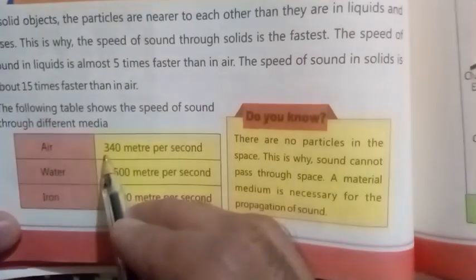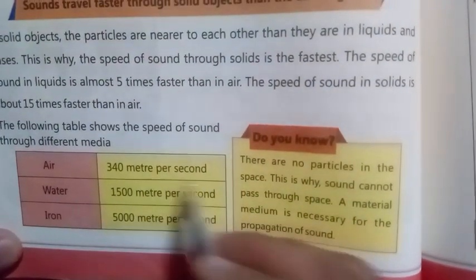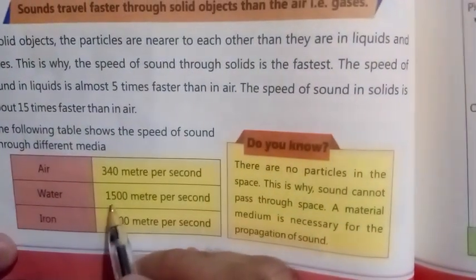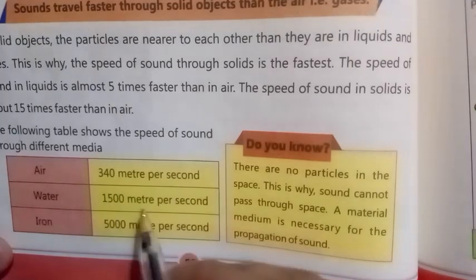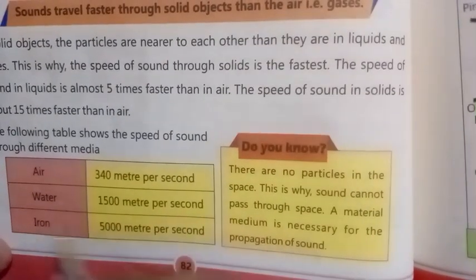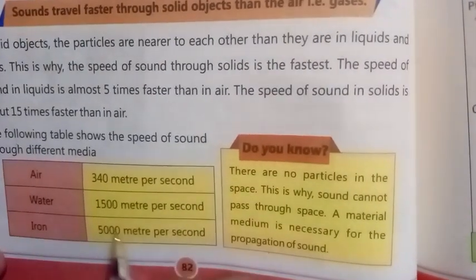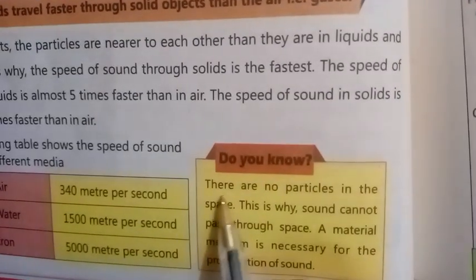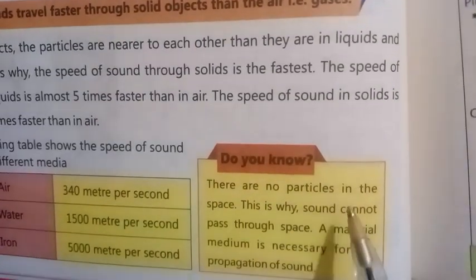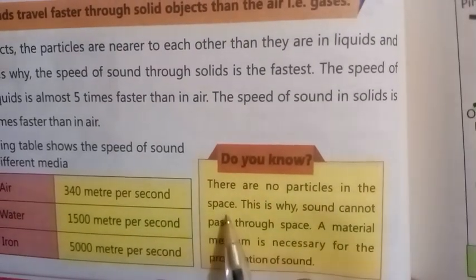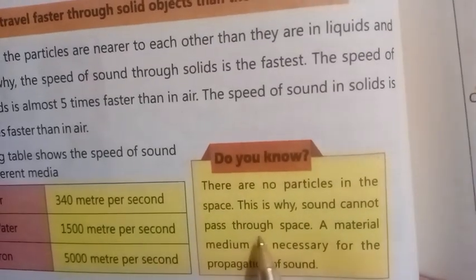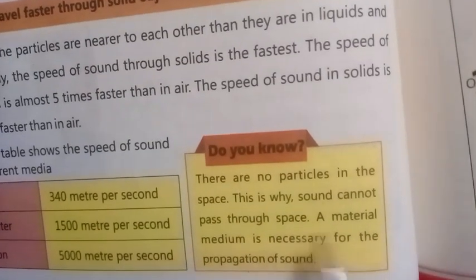The following table shows the speed of sound through different media: Air — 340 meters per second; Water — 1500 meters per second; Iron — 5000 meters per second. Do you know there are no particles in space? This is why sound cannot pass through space.